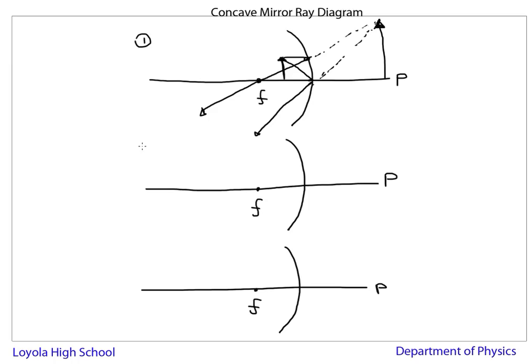Case number two is if you put yourself or an object outside the focal point. I'll see it over here. So same thing, we're going to draw a light ray that's parallel to the principal axis and it's going to go through the focal point because that's the definition of the focal point. And then we're going to draw a light ray that hits the mirror at the principal axis right here and bounces off.